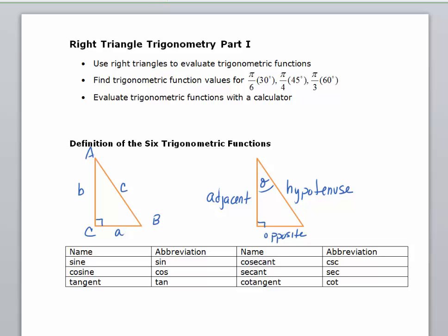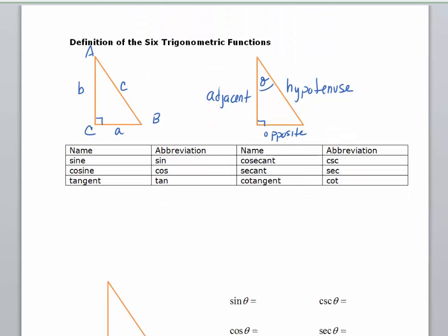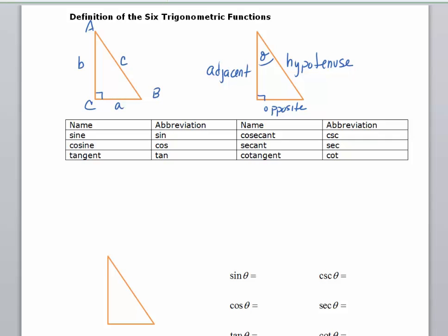Let's first look at the names of the six trigonometric functions and their abbreviations. We have the sine, its abbreviation is sin; we've got the cosine, cos; tangent, tan; cosecant, which is csc; secant, sec; and cotangent, cot.